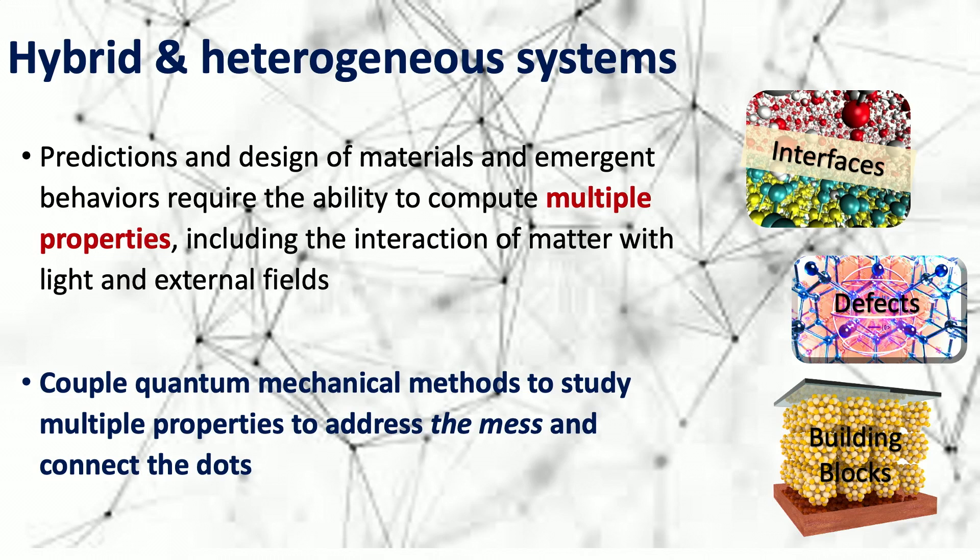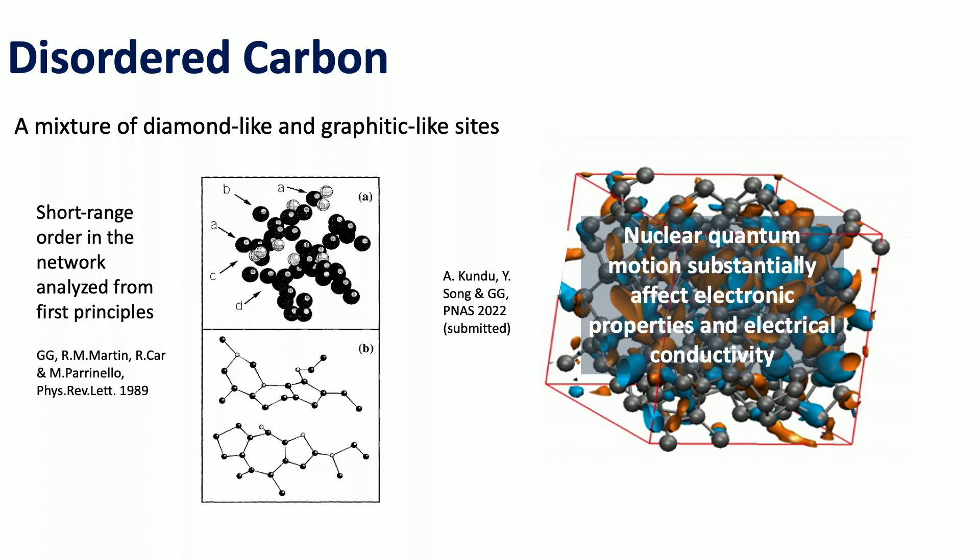We started looking at disordered materials. This is our first work where we combined the calculation of electronic structure and the movement of ions using a method called first-principles molecular dynamics, invented by my mentors. We applied this for the first time to disordered carbons — a material where some atoms are like graphite, as in pencils, and some are like diamond, as in rings. These are very hard materials with numerous applications, and we understood the network completely from first principles. This was 1989.